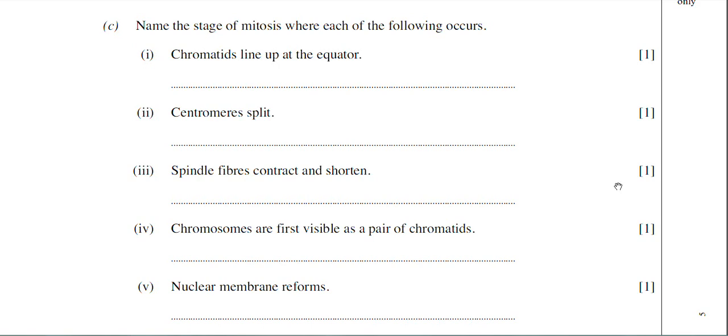Part four: chromosomes are first visible as a pair of chromatids. That will occur during prophase. Remember, prophase is when the chromatin condenses and shortens, and then you get the visible chromosomes appearing.